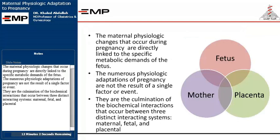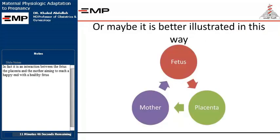The numerous physiologic adaptations of pregnancy are not the result of a single factor or event. They are the culmination of biochemical interactions that occur between three distinct interacting systems: maternal, fetal, and placental. In fact, it is an interaction between the fetus, the placenta, and the mother, aiming to reach a happy end with a healthy fetus.